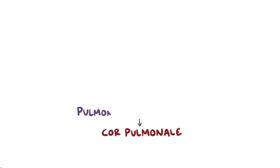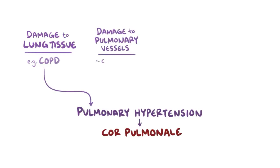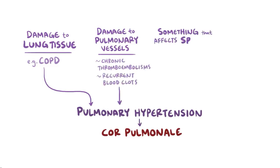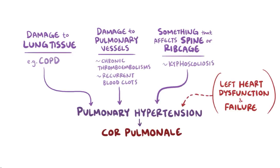Cor pulmonale results from pulmonary hypertension, which typically comes from one of three categories of diseases: something that damages the lung tissue, like chronic obstructive pulmonary disease (COPD); something that damages the pulmonary vessels themselves, like chronic thromboembolisms or recurrent blood clots; and something that affects the spine or ribcage, like kyphoscoliosis, where the spine is curved and the lungs can't fully expand. An important distinction is that left heart dysfunction or failure can also result in pulmonary hypertension, but this would not be considered cor pulmonale because the initial problem is with the heart itself, not with the lungs.